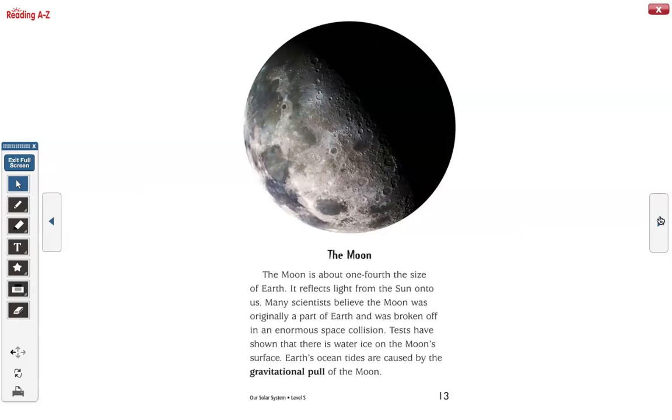The Moon. The Moon is about one-fourth the size of Earth. It reflects light from the Sun onto us. Many scientists believe the Moon was originally a part of Earth and was broken off in an enormous space collision. Tests have shown that there is water ice on the Moon's surface. Earth's ocean tides are caused by the gravitational pull of the Moon.